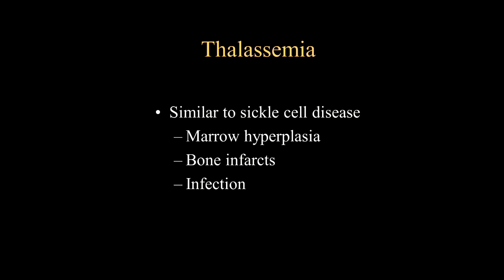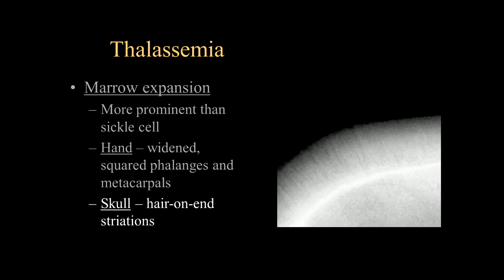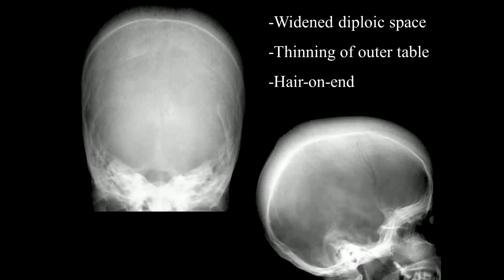The end result is very similar to the features of sickle cell disease: marrow hyperplasia, bone infarcts, as well as increased risk for infection. Here's a classic case of thalassemia in the hands — the red marrow hyperplasia results in a more squared appearance of the phalanges and metacarpals as the bone marrow is packed with more and more red marrow cells. The skull shows the hair-on-end appearance just like sickle cell disease, in similar fashion resulting from red marrow hyperplasia.